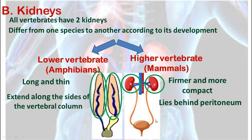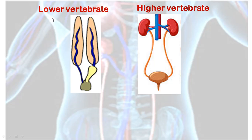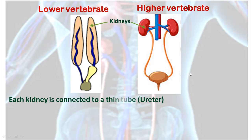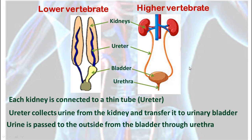The peritoneum is a very thin membrane that encloses our viscera, our internal organs — so our stomach, our small intestine, our liver — they are all enclosed by the peritoneum. So the kidneys are not inside the peritoneum, they are behind the peritoneum. Both lower and higher vertebrates have kidneys, and each kidney is connected to a thin tube called ureter. These ureters collect and transfer the urine from the kidneys to the urinary bladder, and in higher vertebrates the urine is expelled outside through a tube called urethra.